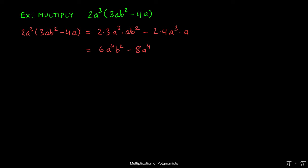2 times 3 will give us a 6. We can use the product rule of exponents to multiply a cubed and a to get a to the 4th. The b squared does not have a corresponding term here, so it just comes along for the ride. 2 times 4 will give us an 8, and similarly a cubed times a will give us a to the 4th.